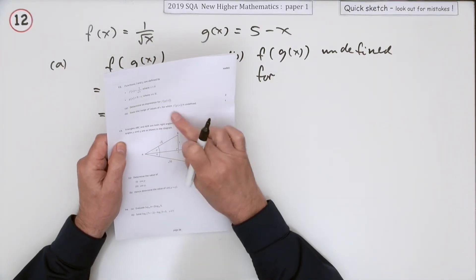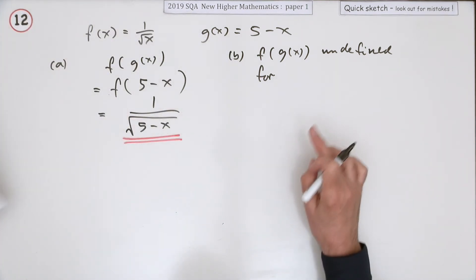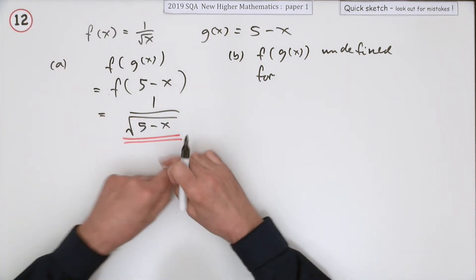Part B then. State the range of values of x for which f of g of x is undefined. In other words, this expression's undefined.